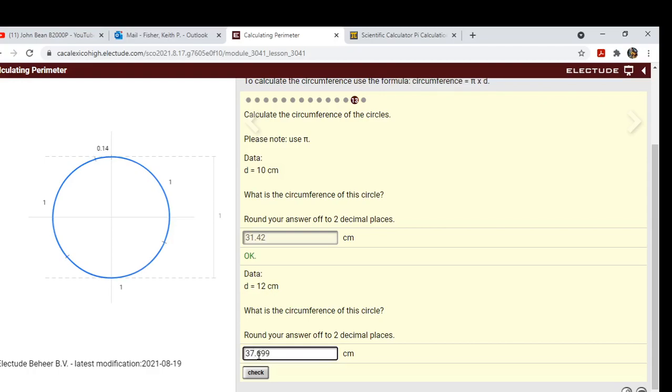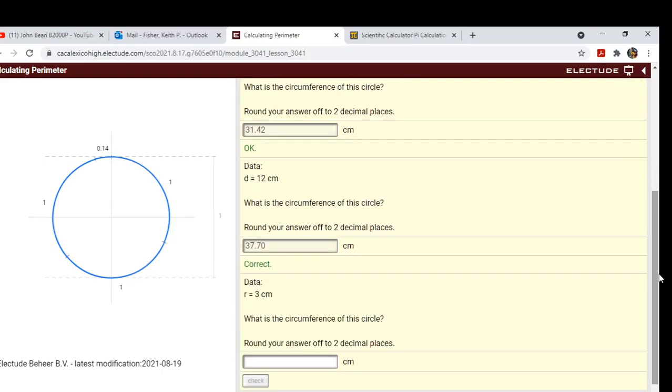37.699, but it says round to the nearest 2, so we need to get rid of this and put 7 0. All right, so oh here it is, so here's radius. So we need diameter, so what you're going to do is just double this to 6.